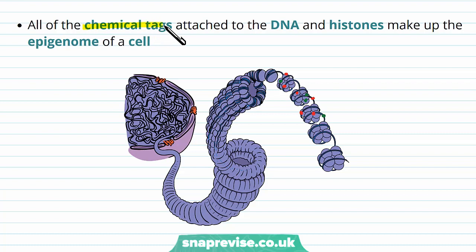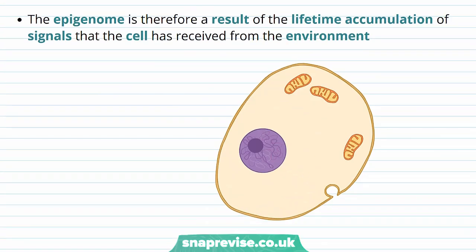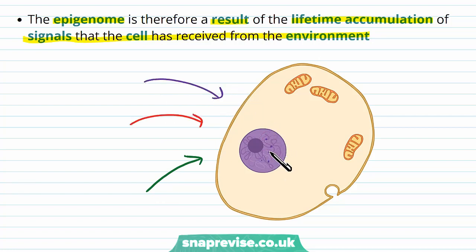When we consider all of the chemical tags attached to the DNA and attached to the histones, this total complex is known as the epigenome of a cell. The genome is the total order of bases for all the genes in the nucleus. The epigenome is simply the same thing but referring to the epigenetic part — the chemical tags on all of the DNA and all of the histones. The epigenome is therefore a complex result of a lifetime accumulation of various signals that the cell has received from its environment. As various things from the environment impact on our cells, they might change the composition of those chemical tags, and therefore change which genes are turned on and off, and this gets passed on to the next generations of cells.